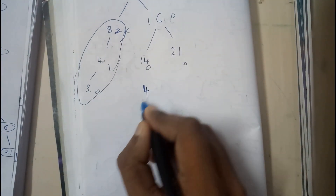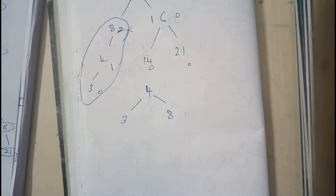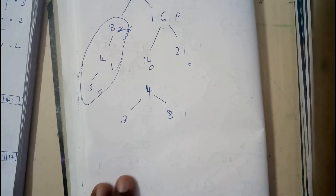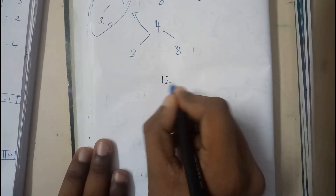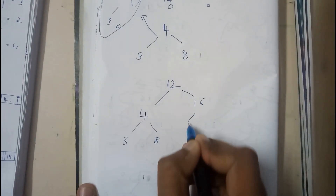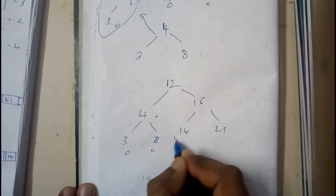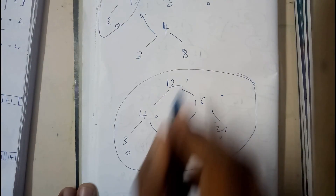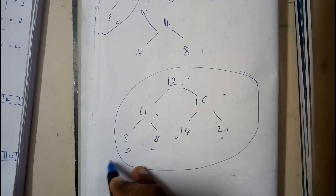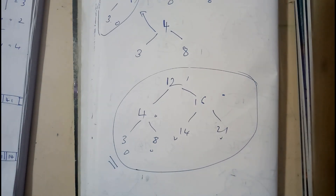The main problem piece: 4 becomes the root of that subtree, 3 goes on one side, and 8 goes on the other. Substituting everything: the final tree is 12 at the root, with 4, 3, 8, 16, 14, 21. All balance factors are zero — a complete AVL tree with all rules satisfied.